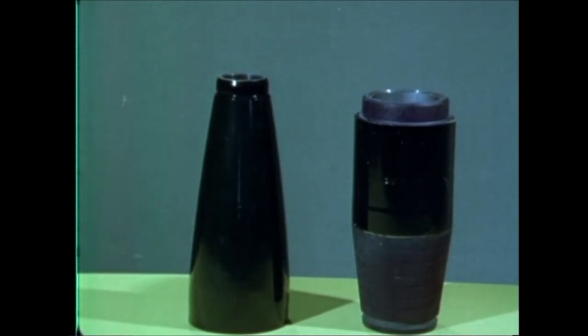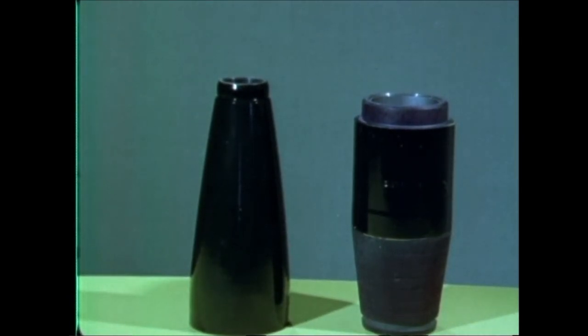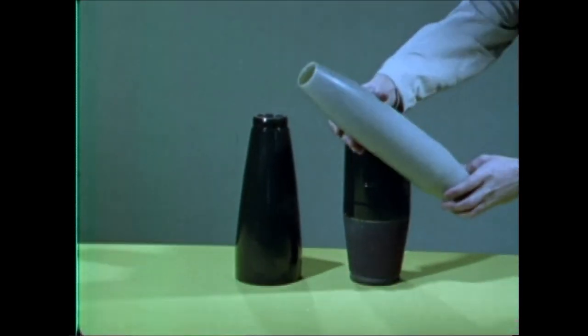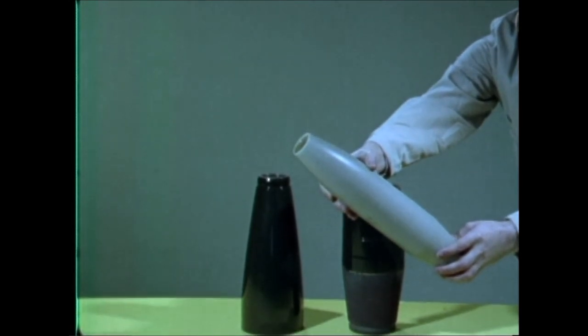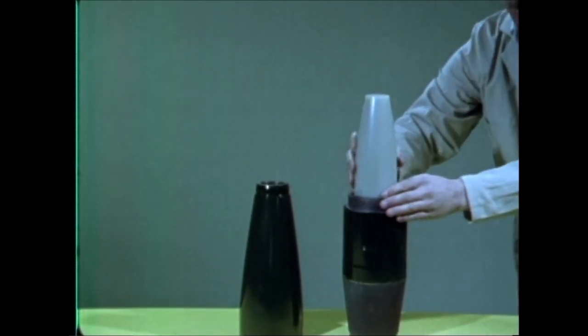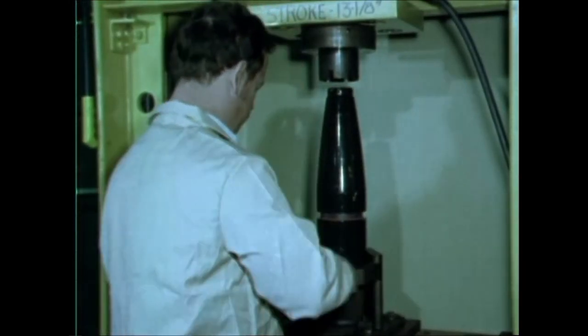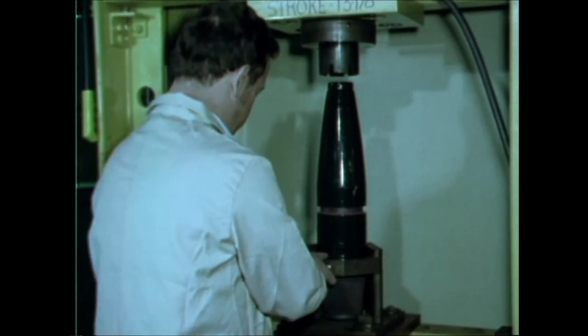In order to make inspection of the explosive easier, the new projectile was designed as a two-piece assembly. This made it possible to use an encapsulated charge that could be thoroughly inspected before it was placed in the projectile. The plastic capsule also served as a mold so that the explosive could be cast, and this eliminated a number of hazardous procedures.